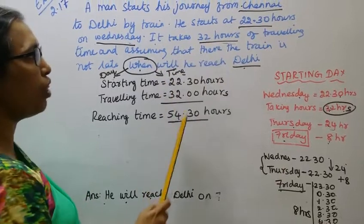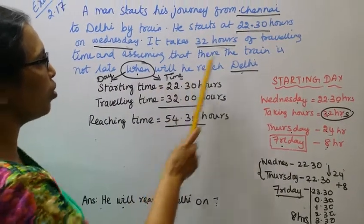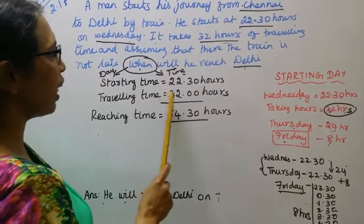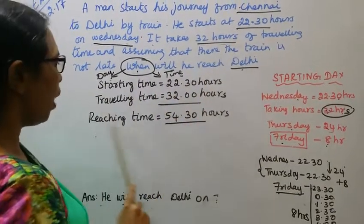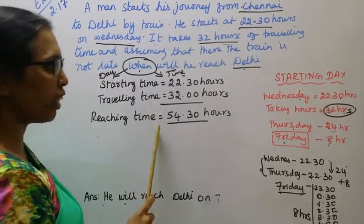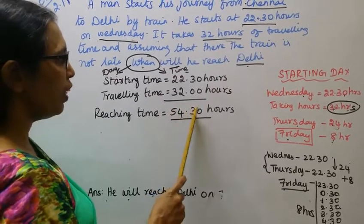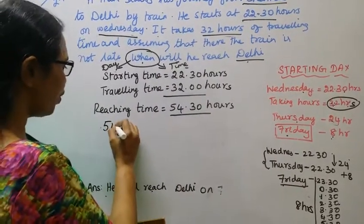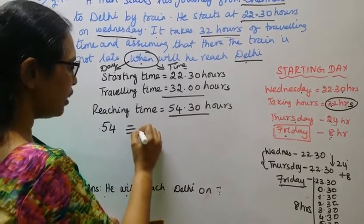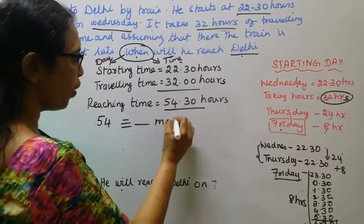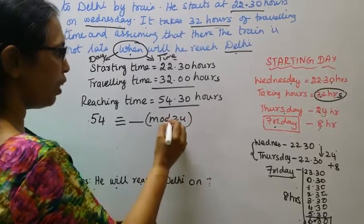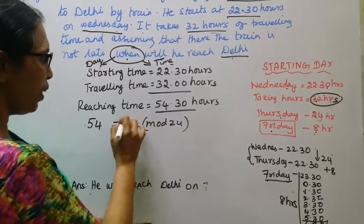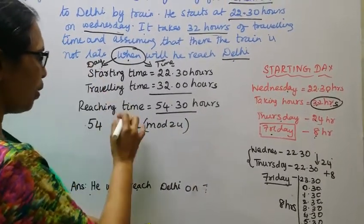But if we have a congruent method, starting time is 22 hours, traveling time is 32 hours, then reaching time is 54 hours. If we go to the next day, 54 congruent, this is modulo 24. One day, 24 hours. Now the remainder is the answer.